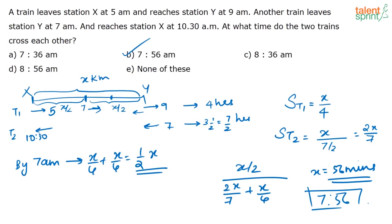The first train is taking 4 hours and the second train 3.5 hours. The first train starts 2 hours before the second, so by the time train 2 departs, train 1 has already covered half the distance, leaving D/2 for both trains to close together using relative speed.